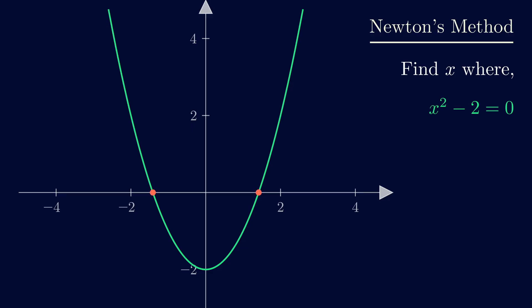Of course, we can easily solve this algebraically. One of the roots is the square root of 2 and the other one is the negative of that. But what if we want to know what this is in decimal form? This is where Newton's method comes in.